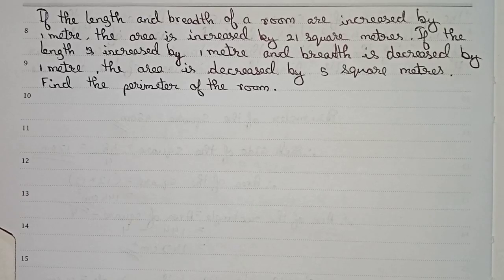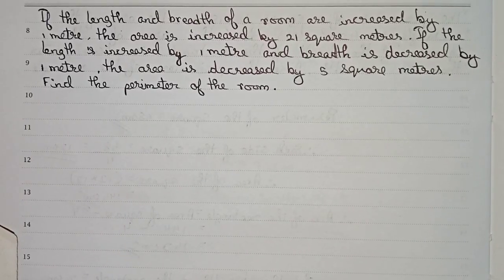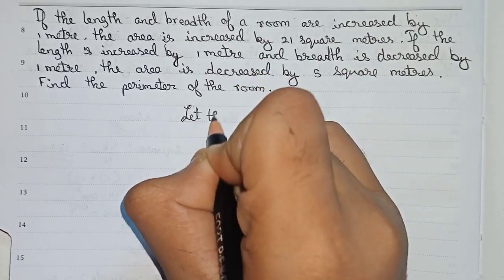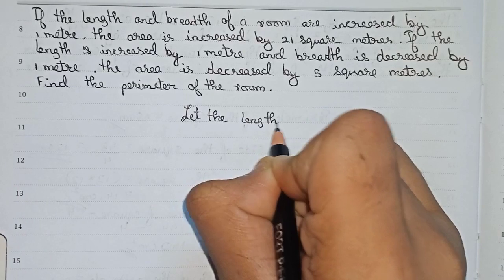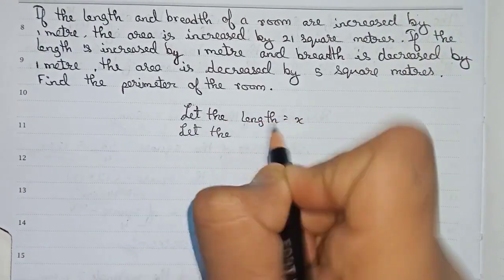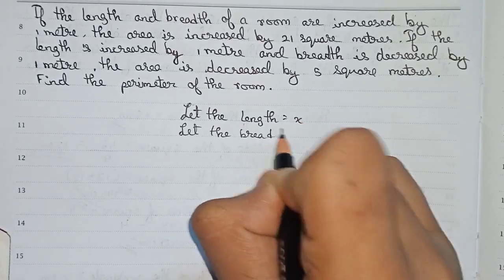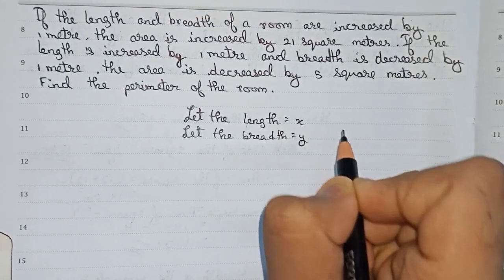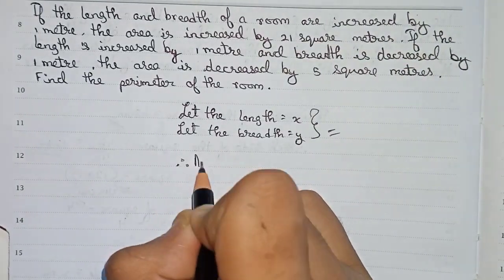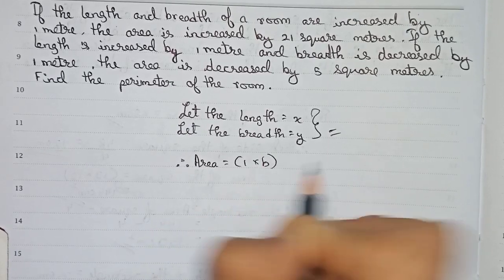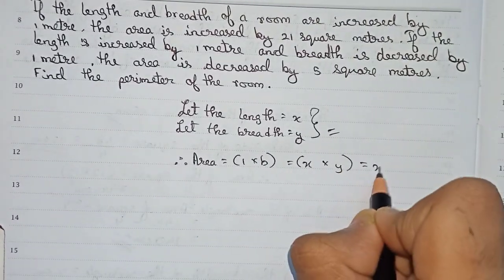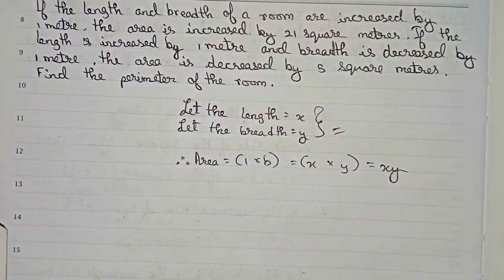So this is a question of solving simultaneous equations. First, let the length be equal to x and let the breadth be equal to y. So we take the length and breadth as x and y. Therefore, the area will be length into breadth, so x into y, that will be xy.